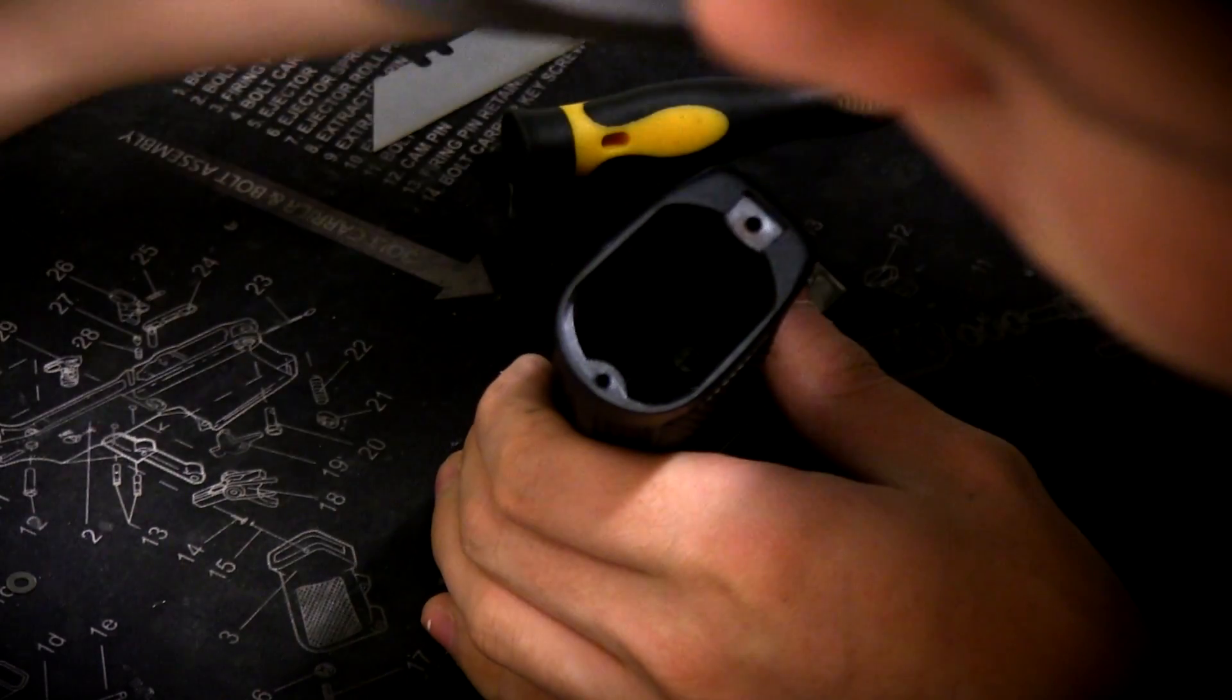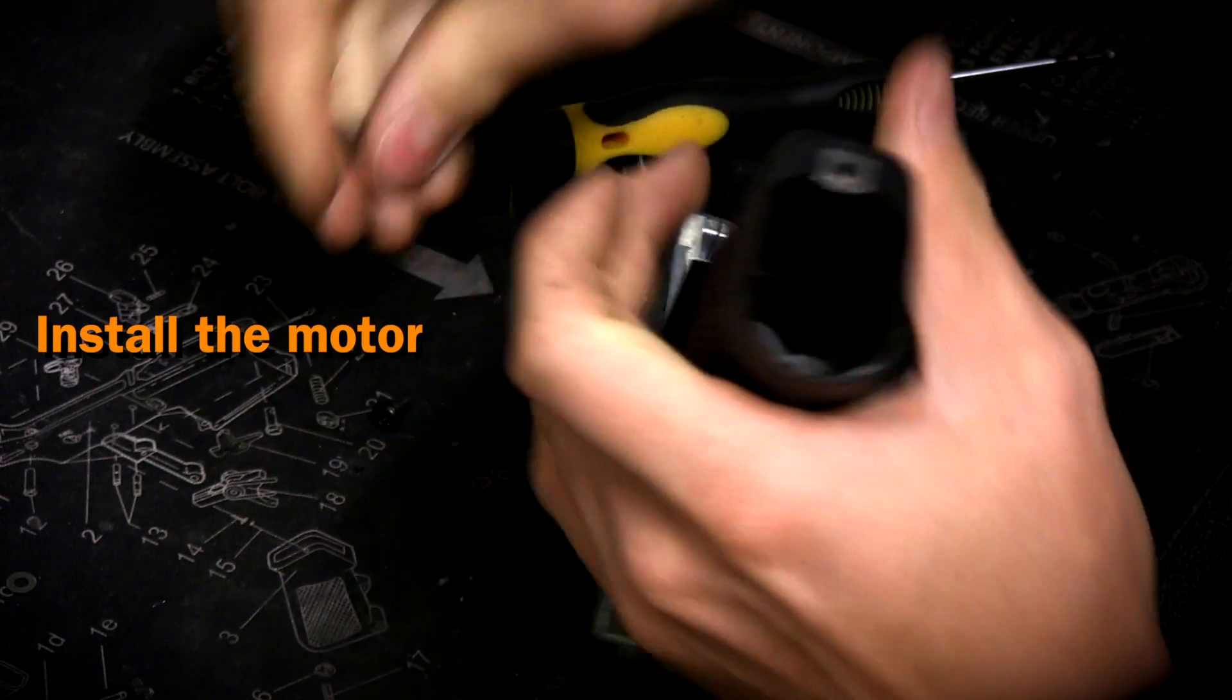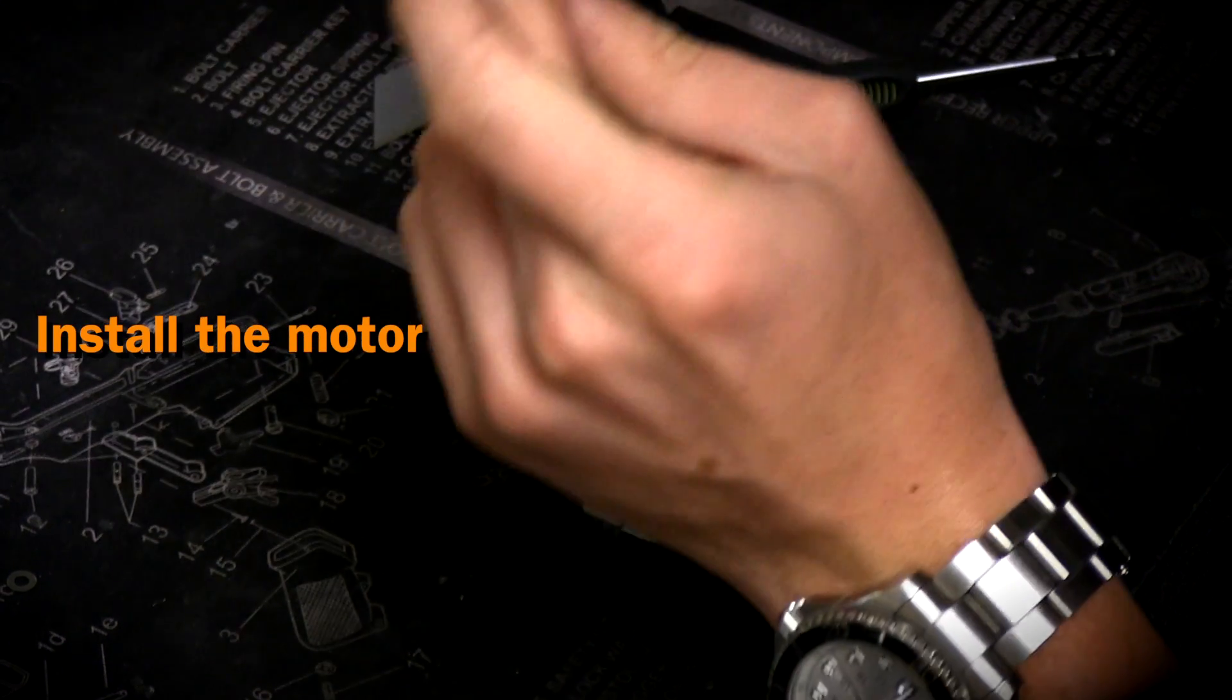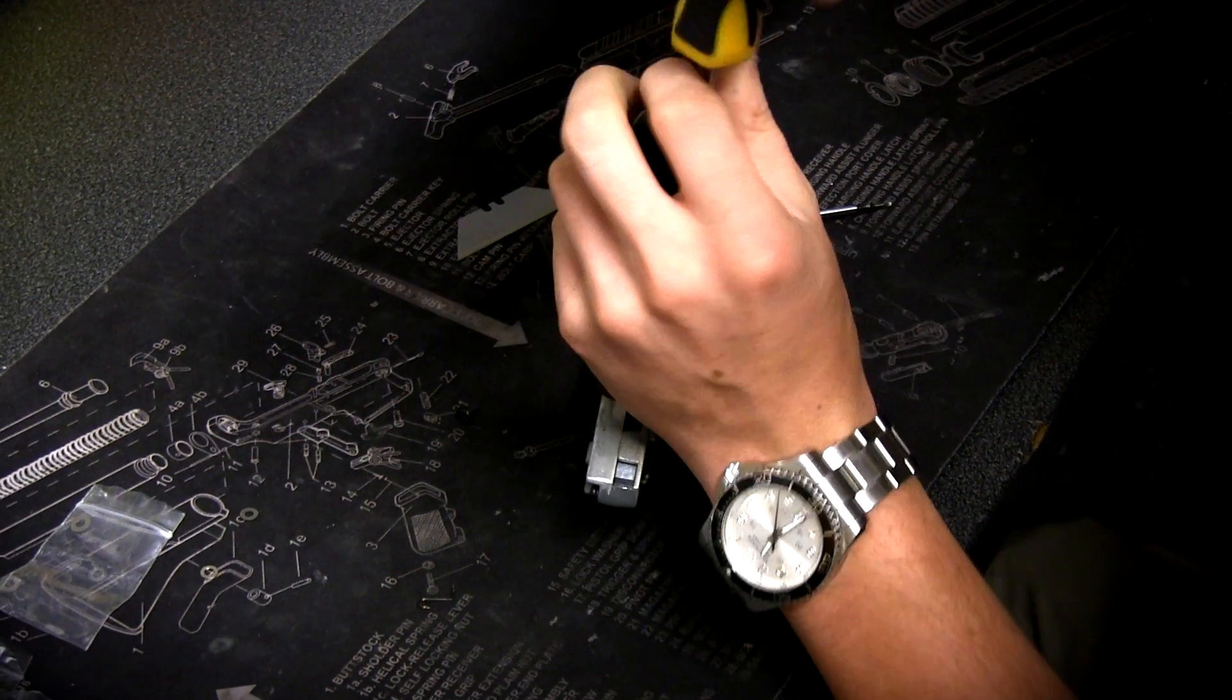Next thing I'm going to do is go ahead and install our motor. Again, different for every gun design. This is going to differ highly depending on which model you're working on. I'm working on an M4 today, so I'm going to go ahead and install the grip.